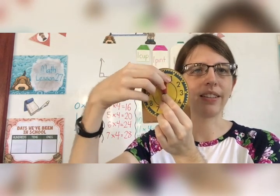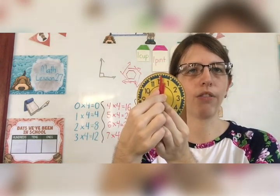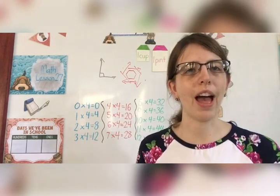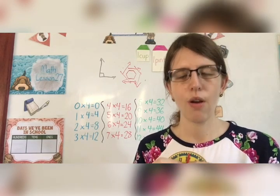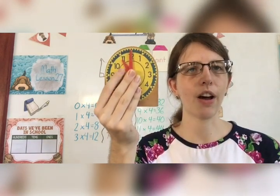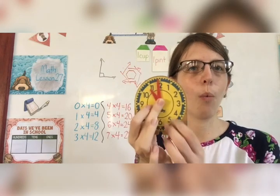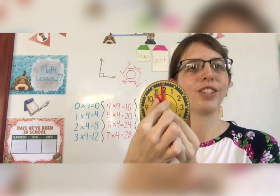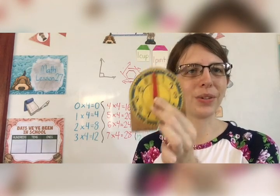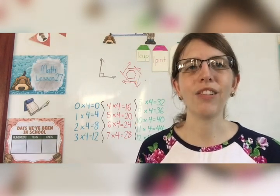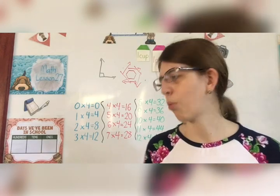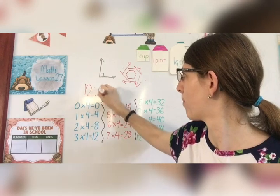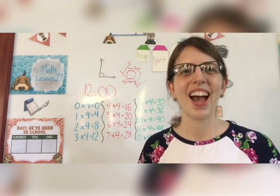Now, where should my hour hand be? Since my minute hand is on the 12, where does the hour hand, this one, need to go? Does it need to go on the 12, or on the 11, or in the middle? Where does it go? Well, once I reach the 12, I start a new hour. So, my hour hand goes on the 12, too. So, now it is 12 o'clock. 12 o'clock. Just like that.